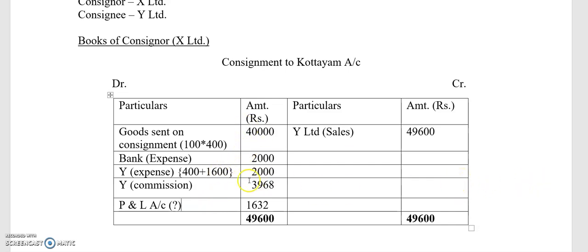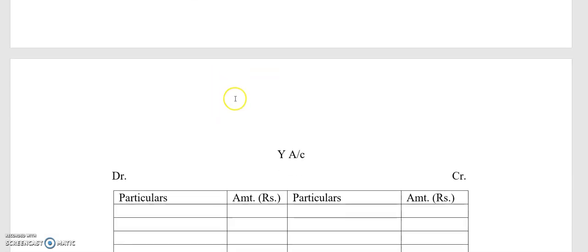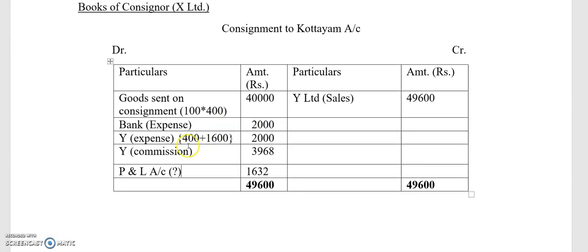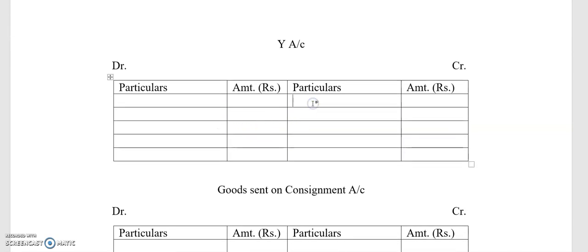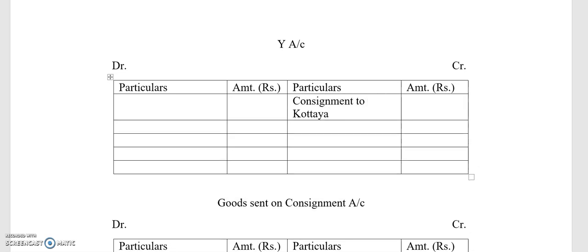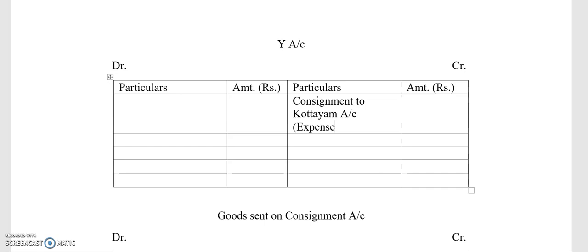The first account is now complete. If we total the debit side and credit side, we get the balance. The second important account is the consignee account — that is the Y Limited account. The Y account records expenses and commission on the credit side, and sales on the debit side. We record consignment account entries: first item is expense ₹2,000.